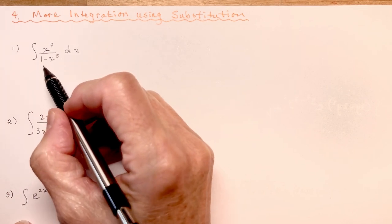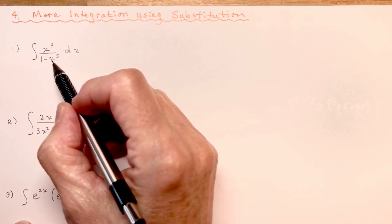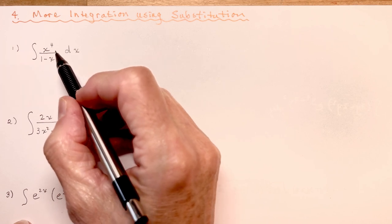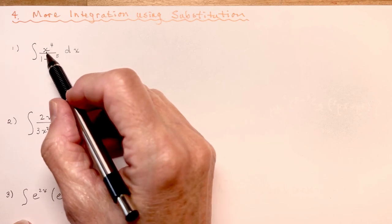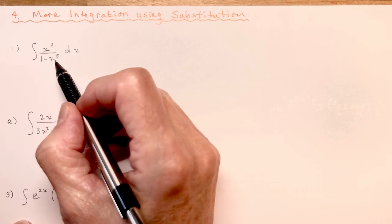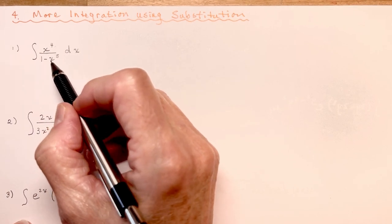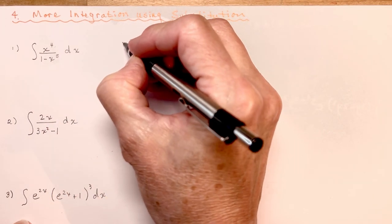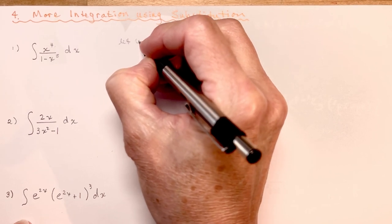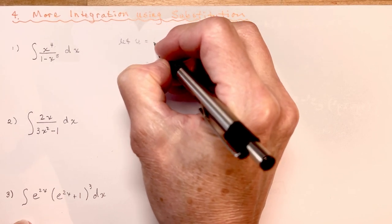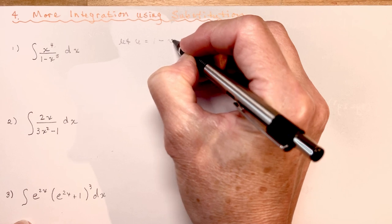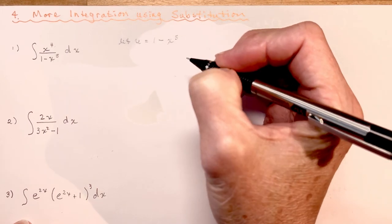So in other words, if I look here, if I took the derivative of x to the 5th, I would have minus 5x to the 4th, which is kind of like the x to the 4th in the numerator. So I'm going to let u be equal to 1 minus x to the 5th.